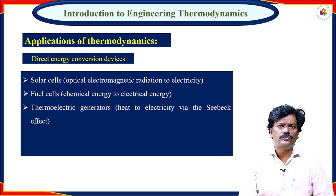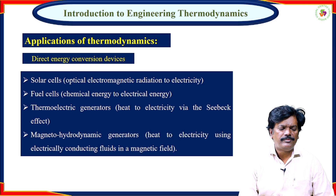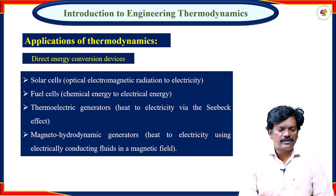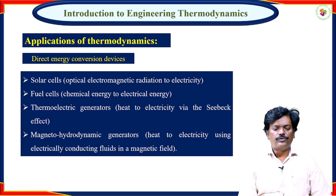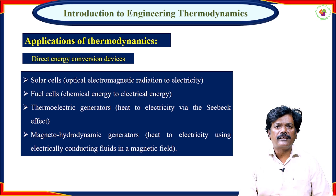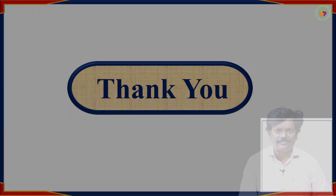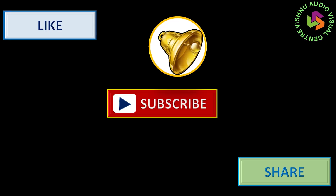In thermoelectric generators, when two dissimilar metals are joined to form two junctions — one hot and one cold — an EMF is generated. Magnetohydrodynamic (MHD) generators convert heat to electricity using electrically conducting fluids in a magnetic field. Thank you — like, share, and subscribe; hit the bell icon for more updates.